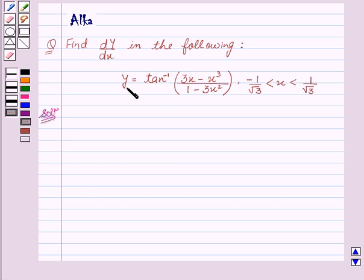Our equation is y equal to tan inverse 3x minus x cube upon 1 minus 3x squared, and minus 1 upon root 3 is less than x is less than 1 upon root 3.